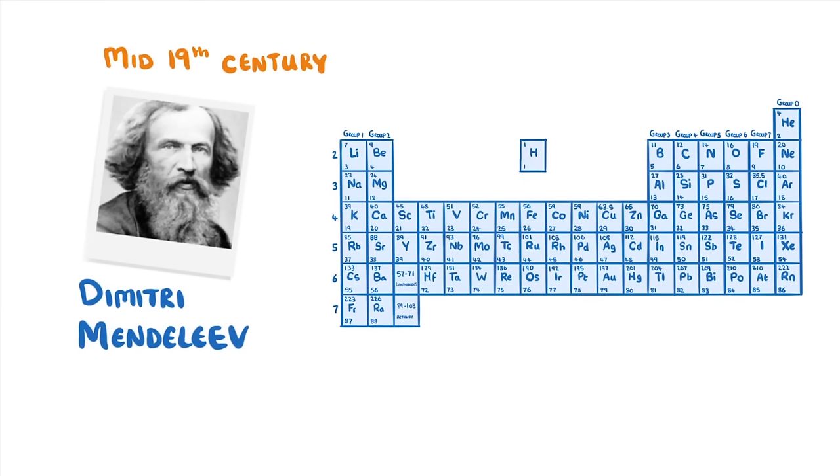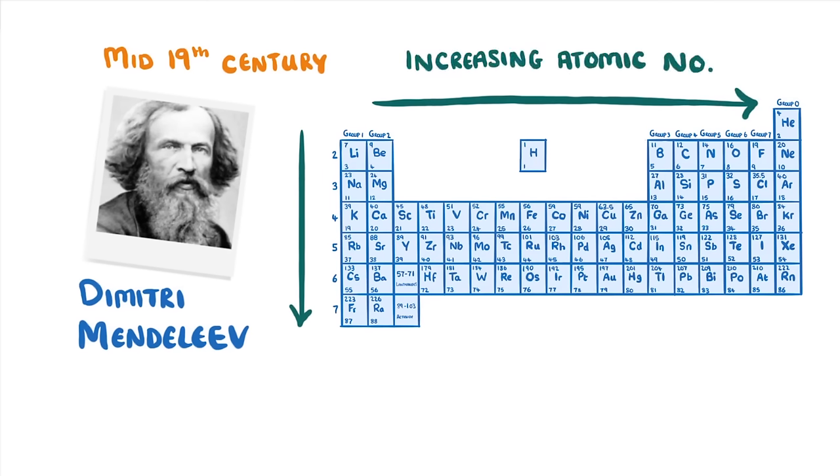Just like a book, it's read from left to right, and from top to bottom, with the elements arranged in order of increasing atomic number, which represents the number of protons in the atoms of that element.